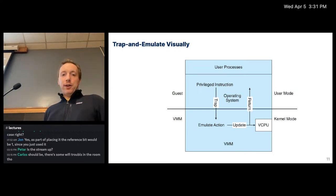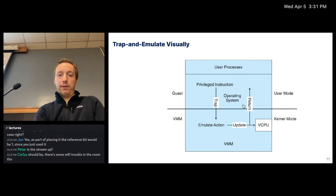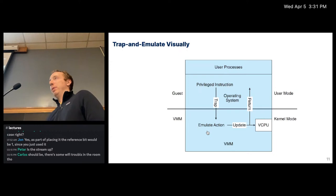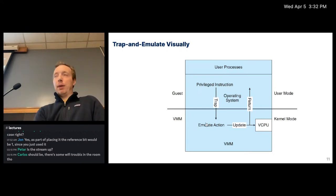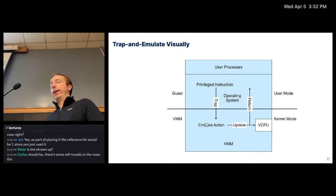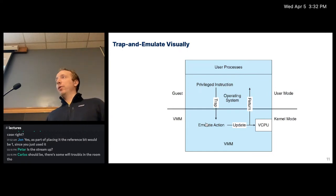Visually: your guest operating system runs as a normal user process. The VMM, also in user mode, emulates the kernel. If that guest kernel tries to execute a privileged instruction like changing the root page table, it generates a trap or exception. You catch that trap, handle it by emulating what it was supposed to do on hardware, update your model of the CPU, and then start executing that kernel again until it runs something else you need to emulate.